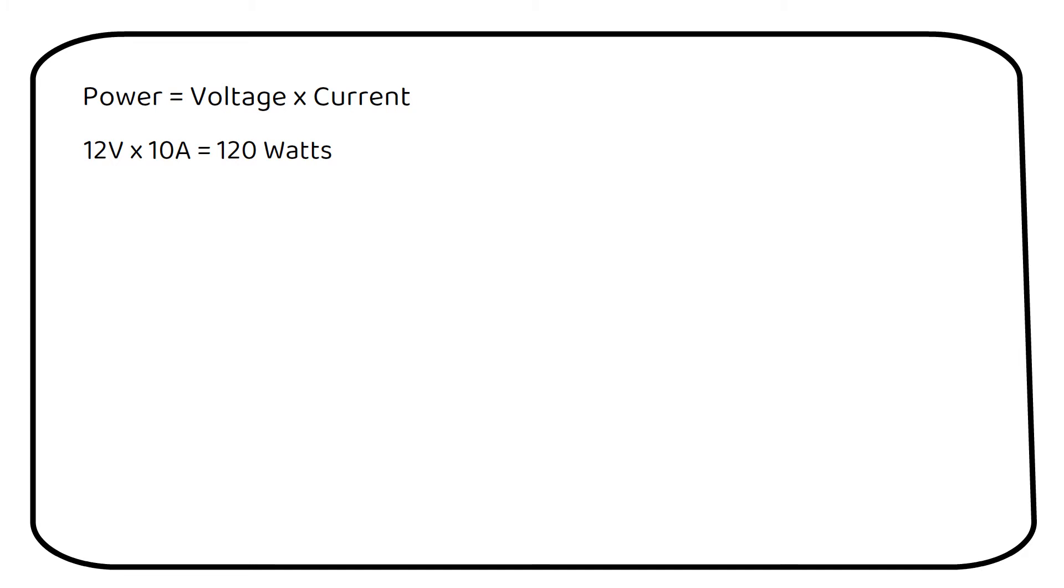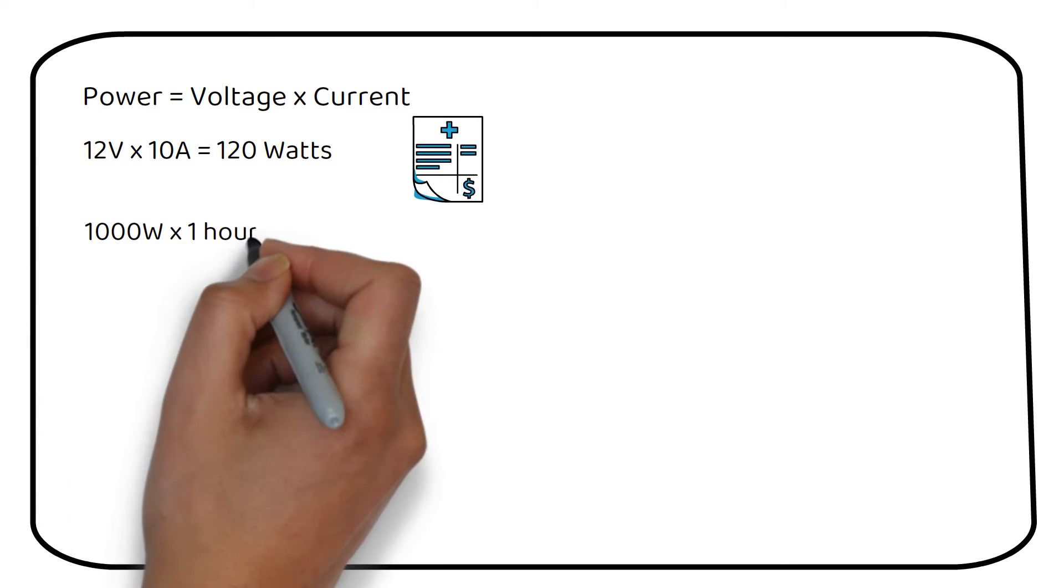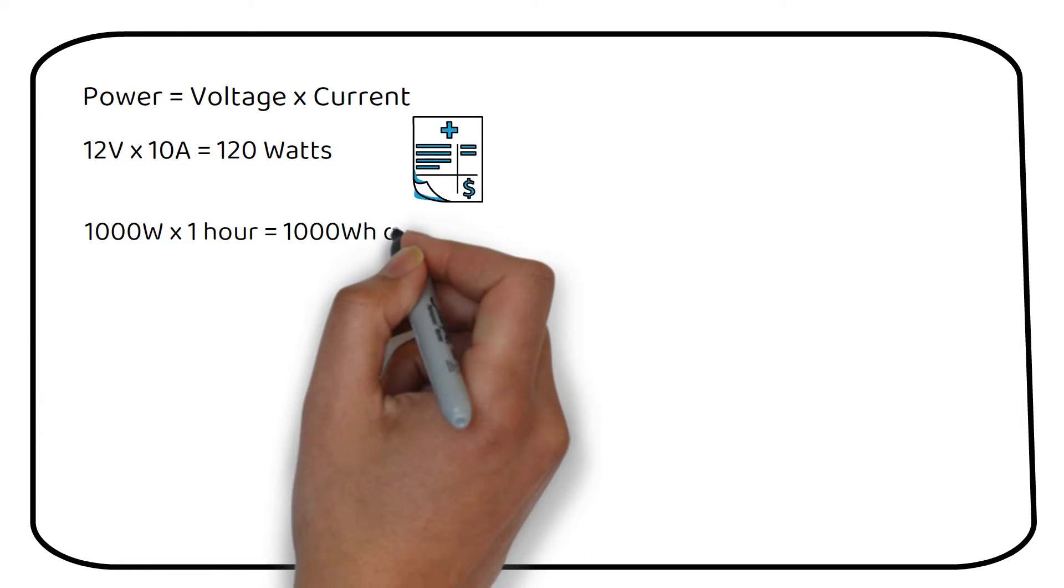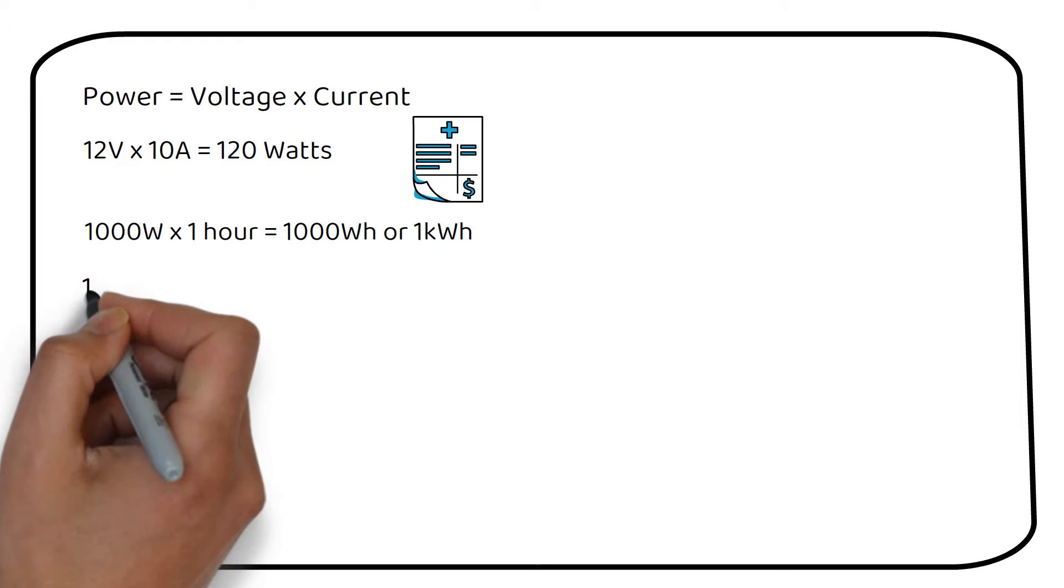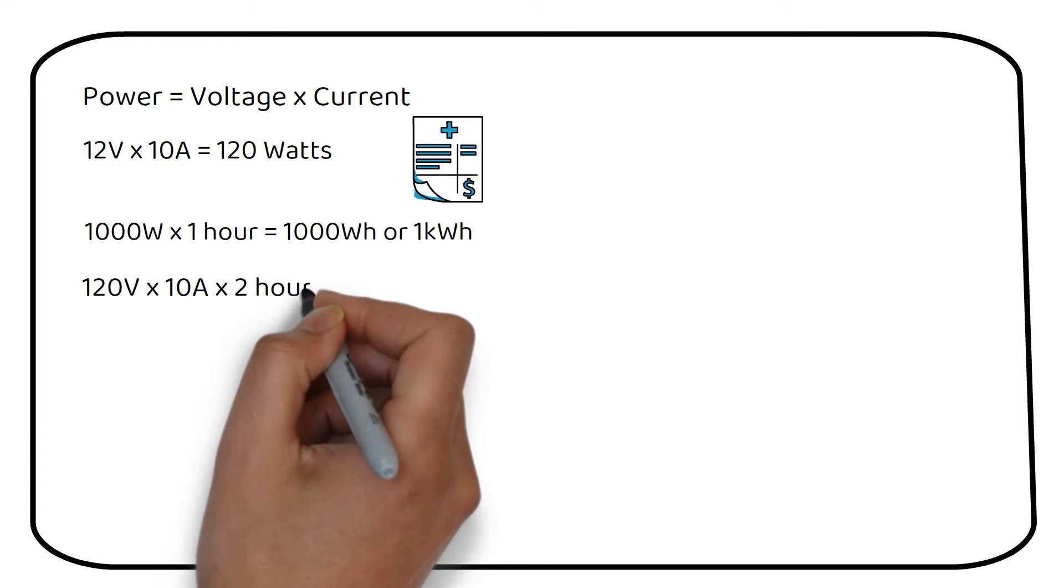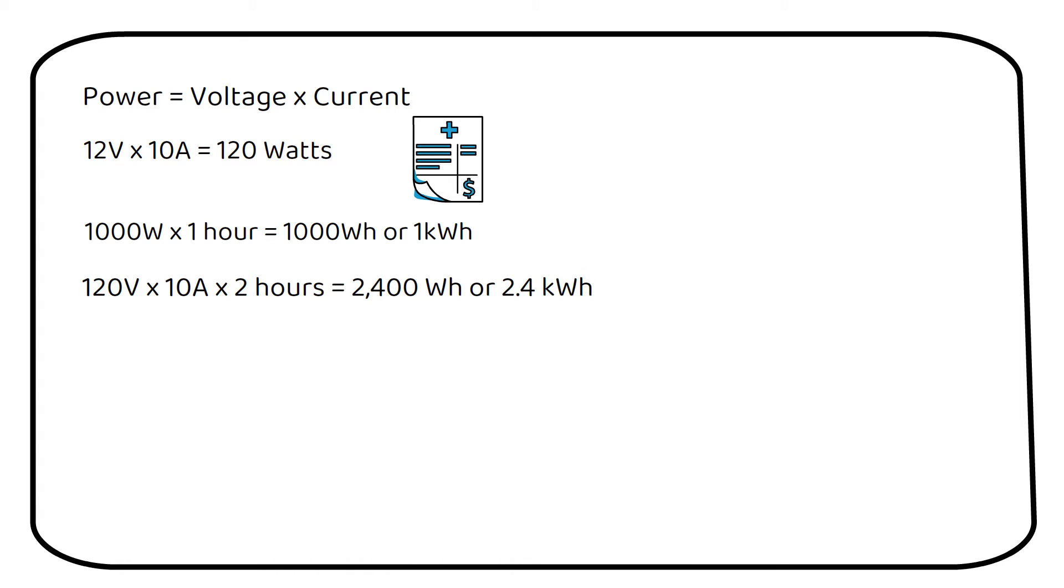To measure the power consumed over a specific time, we use watt-hour. This is the unit on your electrical bill. If a 1000 watt heater runs for 1 hour, the heater consumed 1000 watt hours or 1 kilowatt hour. Another example would be a heater at 120 volts and 10 amps that runs for 2 hours, which consumes 2400 watt hours or 2.4 kilowatt hours.